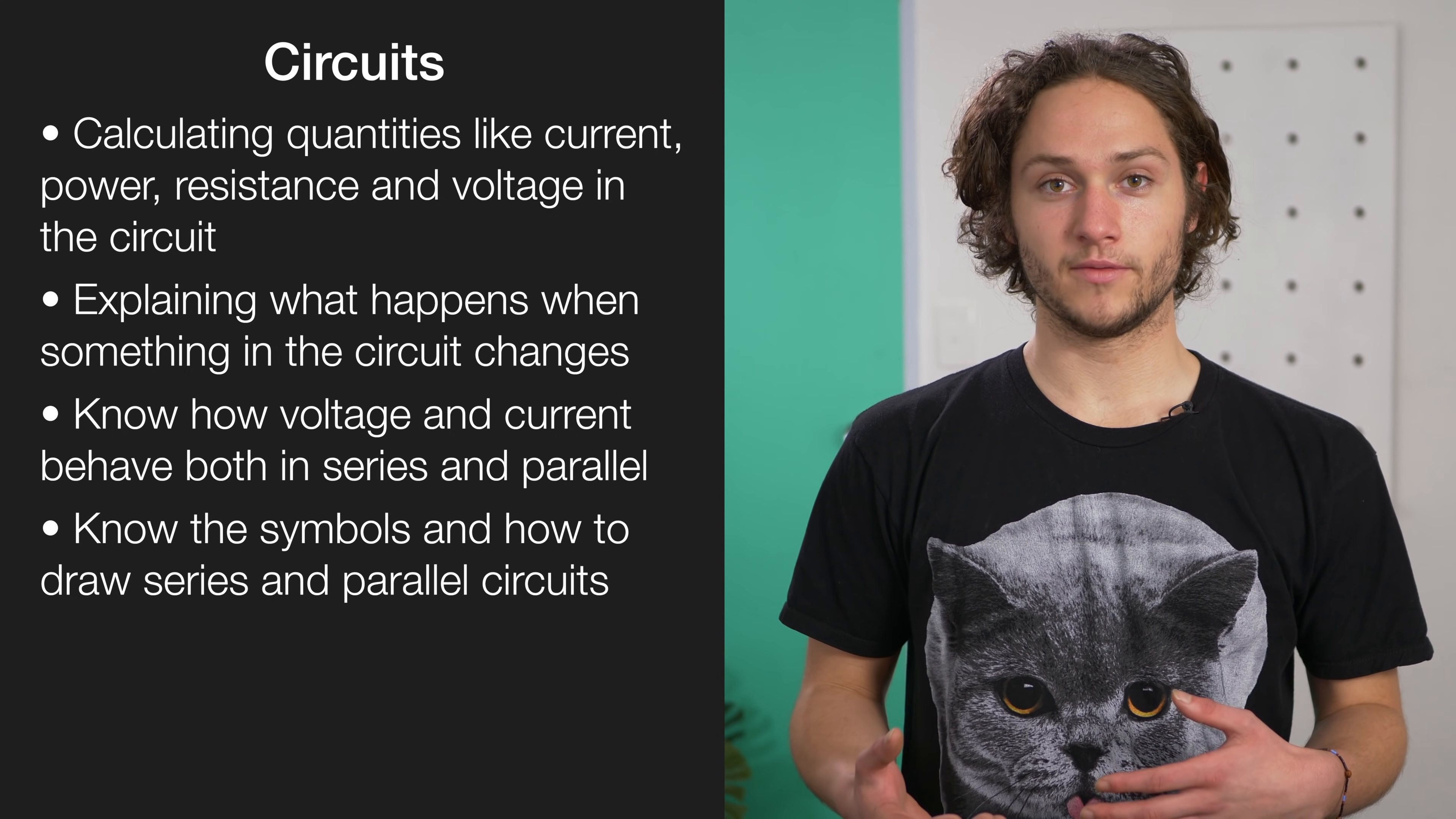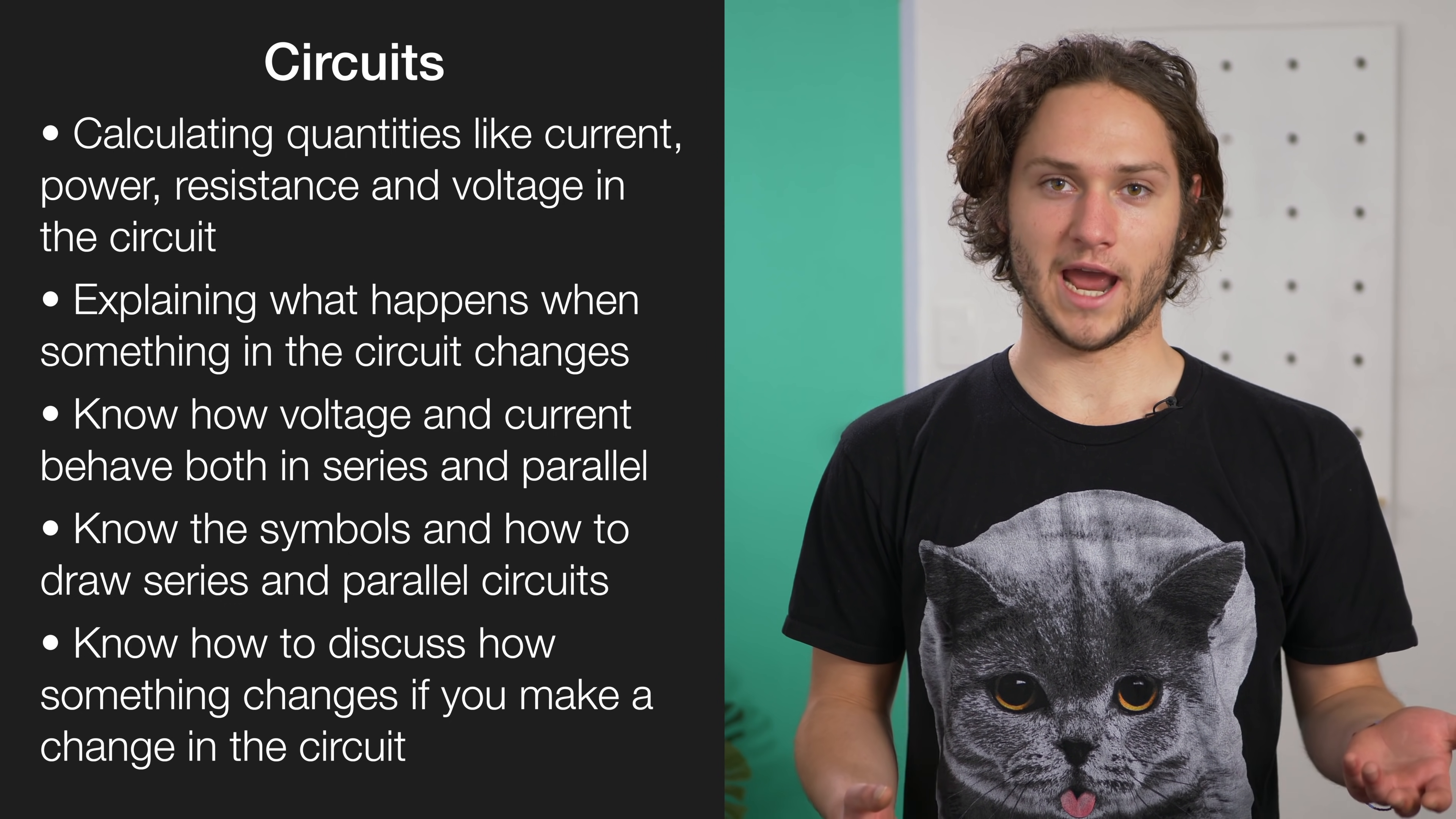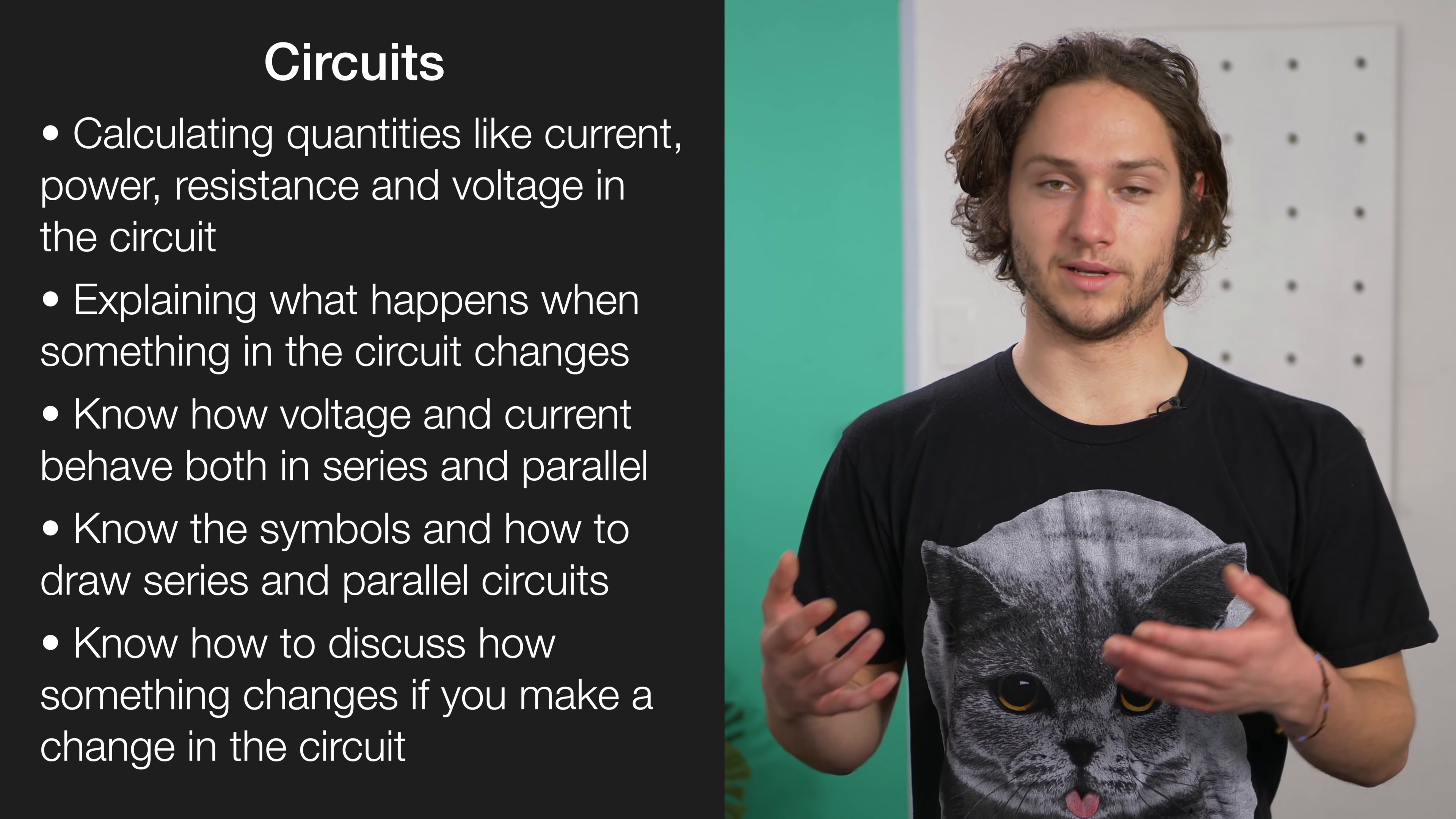For the description part, you'll be expected to discuss how something changes when you make a change in the circuit. For example, how does the brightness of a bulb change when the resistance increases? Well, if the resistance increases, that means the current drops, which means the power delivered to the bulb is less, which means the bulb is less bright.